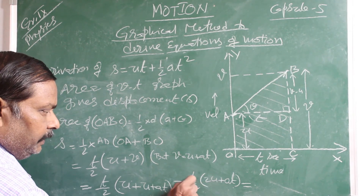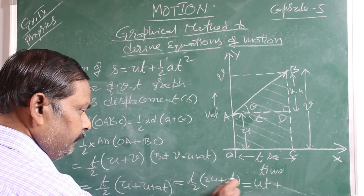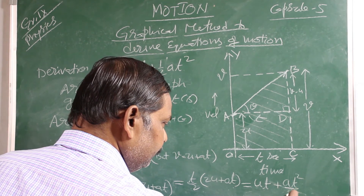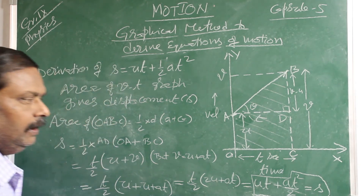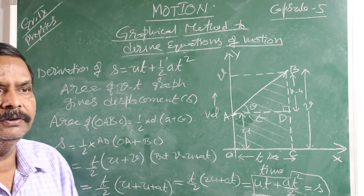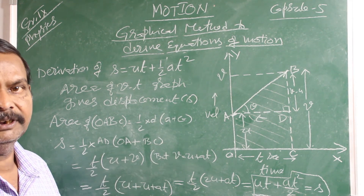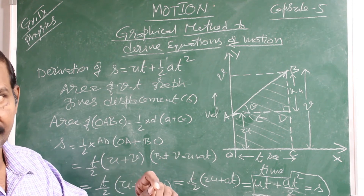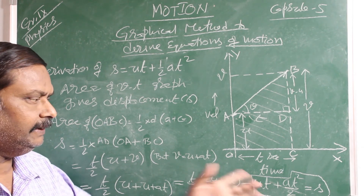Expanding this: S = T/2 × 2U + T/2 × AT = UT + AT²/2. So S = Ut + ½AT². The main rule applied here is that the area of the velocity-time graph gives the displacement, whereas in the derivation of V = U + AT, we used the rule that the slope of the VT graph gives the acceleration.